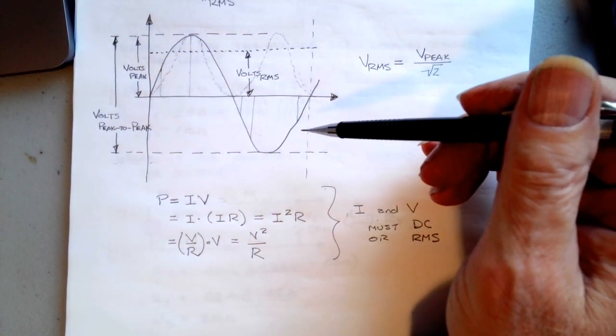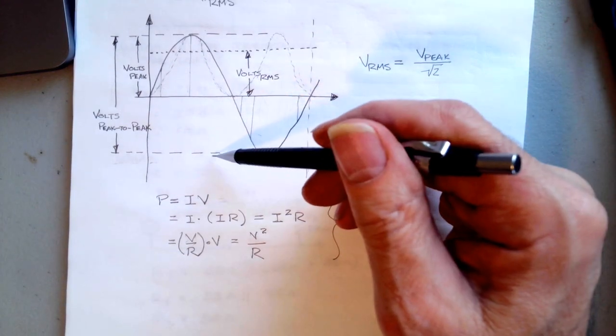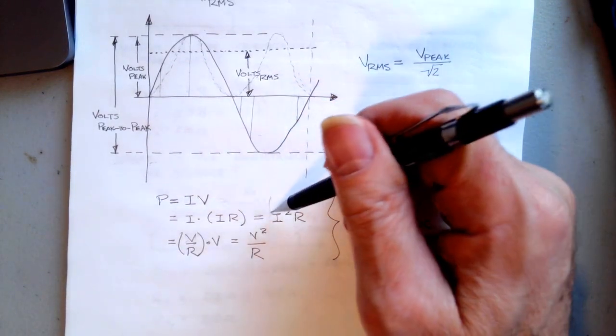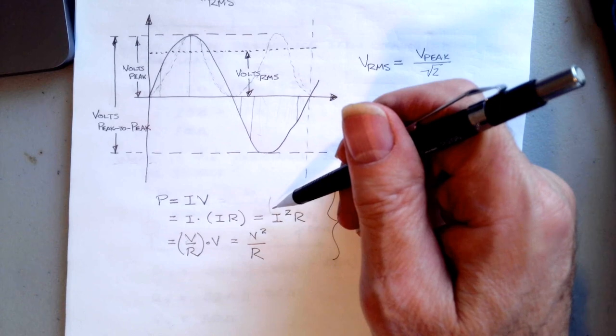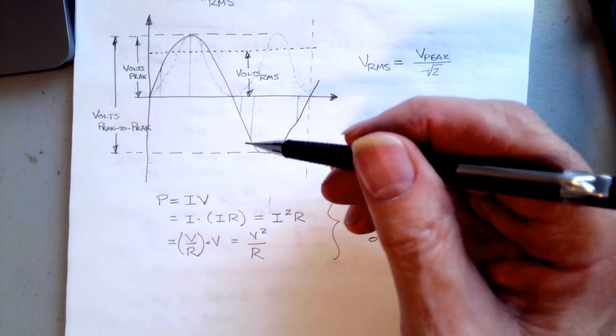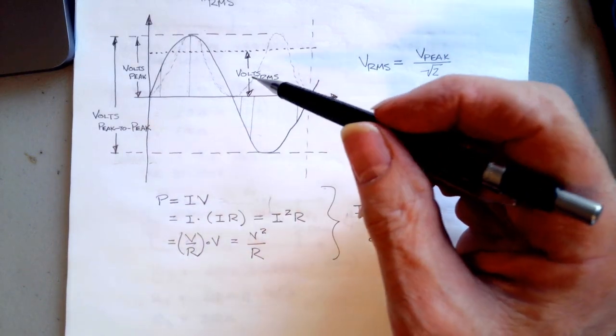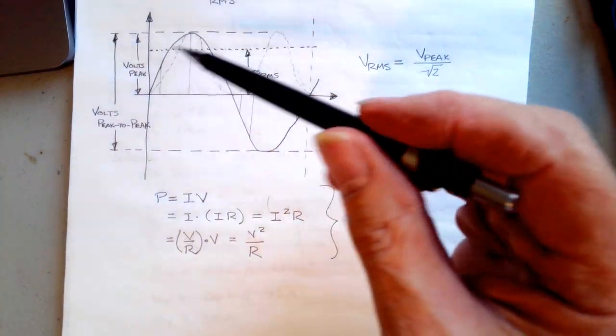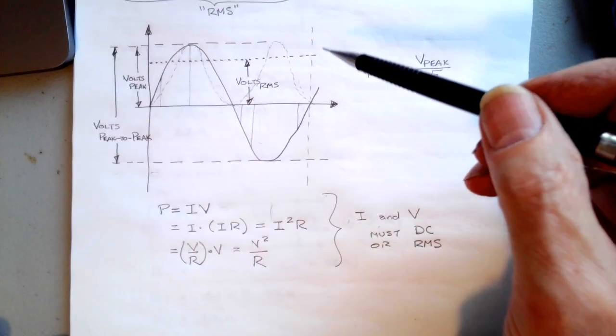Then to get the voltage back—remember power is V squared over R, if we're using voltage—we have to take the average power and take the square root to get back to the voltage. So the square root of the mean square means add up all these powers, square them, and divide them by R. Or again, we're going to divide them by R at the end.